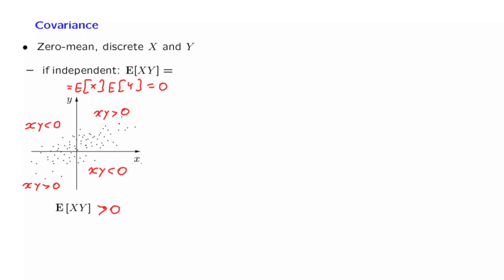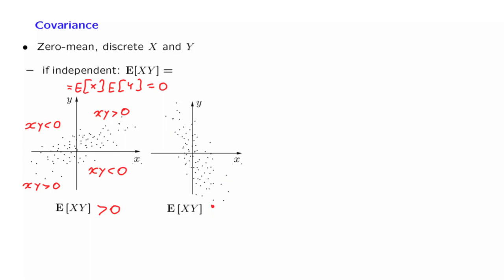On the other hand, if the diagram takes this form, then most of the time, the pair (x, y) lies in this quadrant or in that quadrant where the product x times y is negative. So the random variables x and y typically have opposite signs, and on the average, the expected value of x times y is going to be negative.